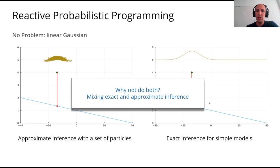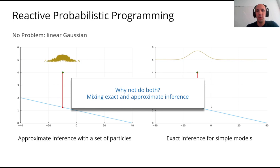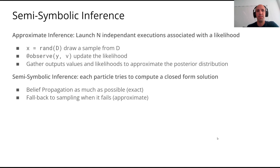This is the second main feature of our library: we try to mix exact and approximate inference — doing exact inference as long as it's possible and only relying on sampling when we are not able to do the exact computation.